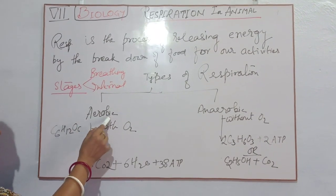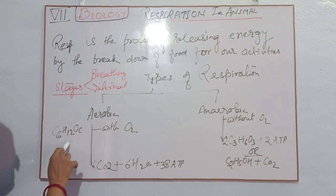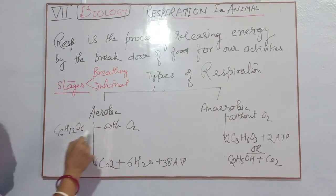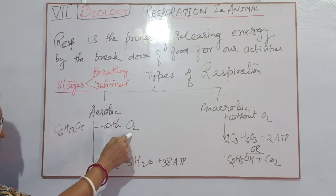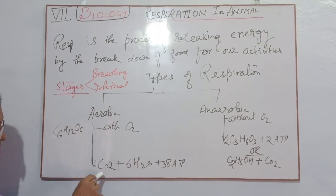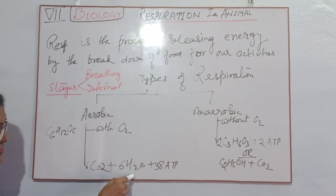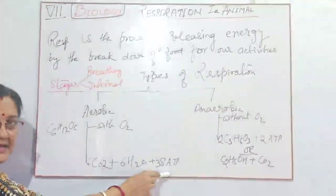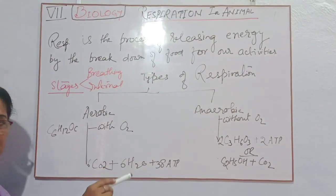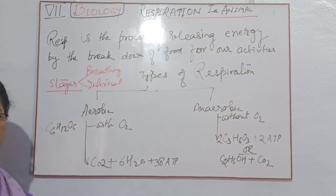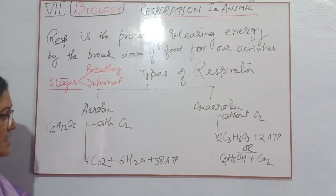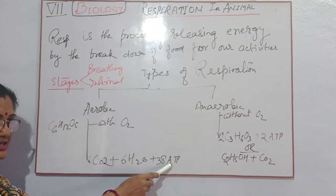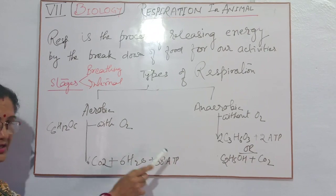In aerobic respiration, glucose is burned or oxidized in the presence of oxygen to form carbon dioxide, water molecules, and 38 molecules of ATP. ATP stands for adenosine triphosphate, which is the energy currency of the living body.